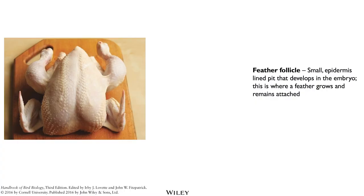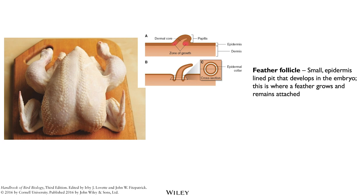This is what a bird without feathers looks like, but you see some raised parts — these are what are called feather follicles. This is where feathers come from, where they emerge from, and these are what hold the feathers in place. There are small epidermal slide bits that develop in the embryo, and that's where the feather remains. If you get further in, there is something called an epidermal collar.